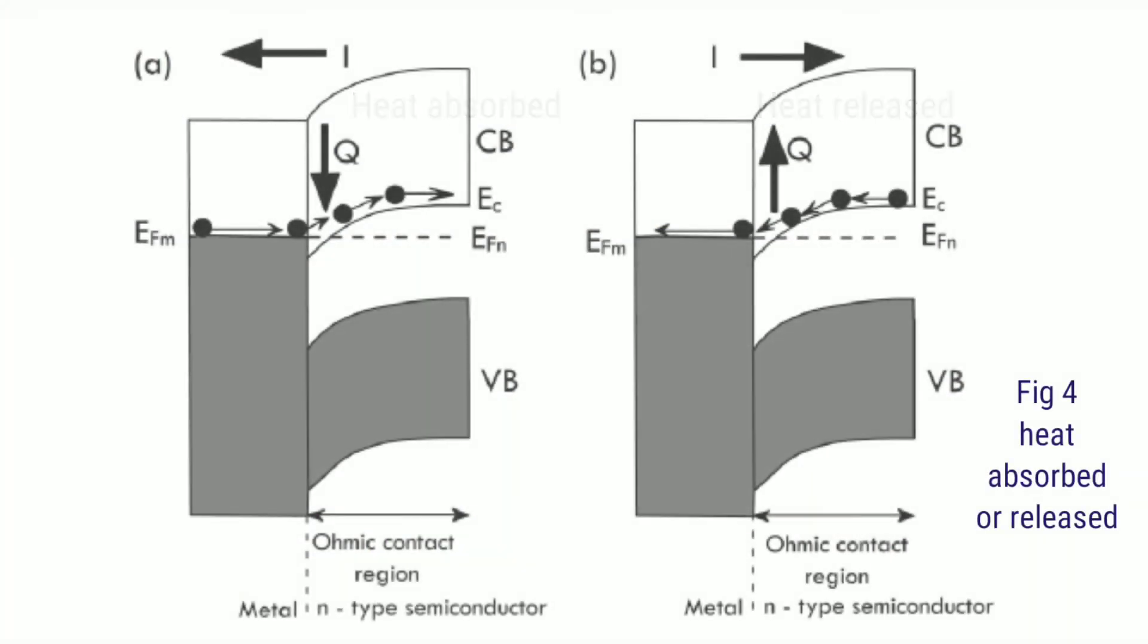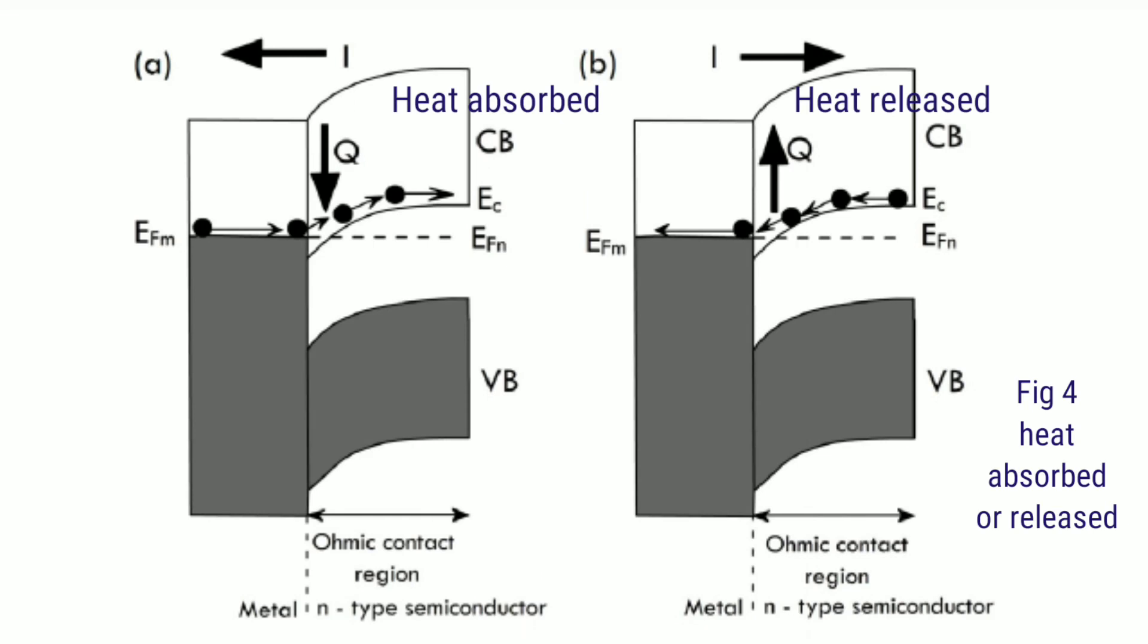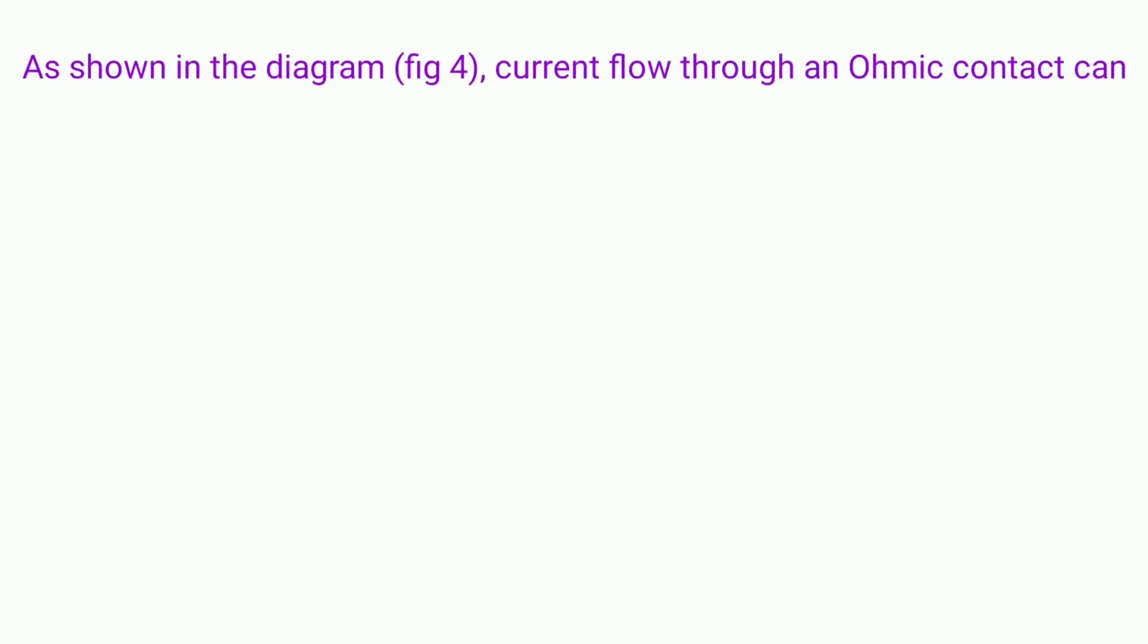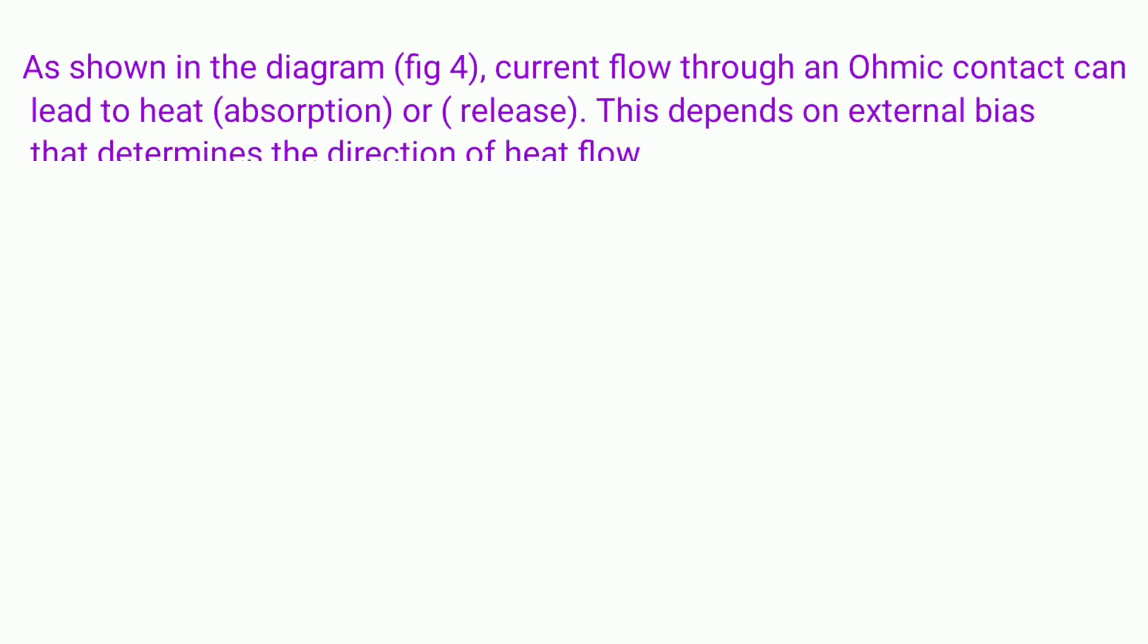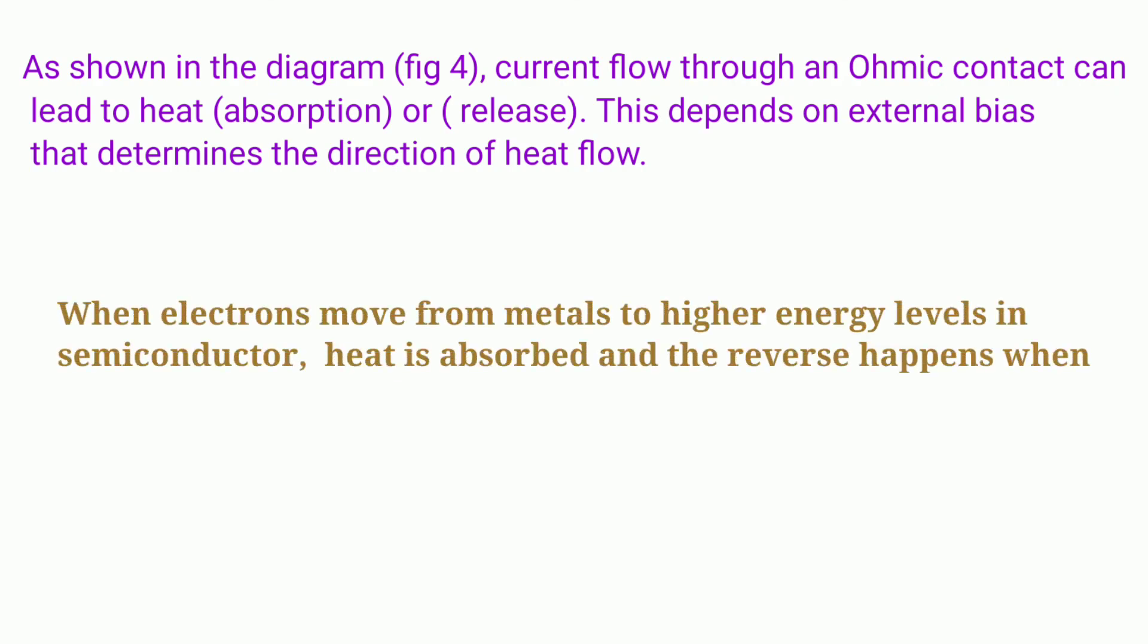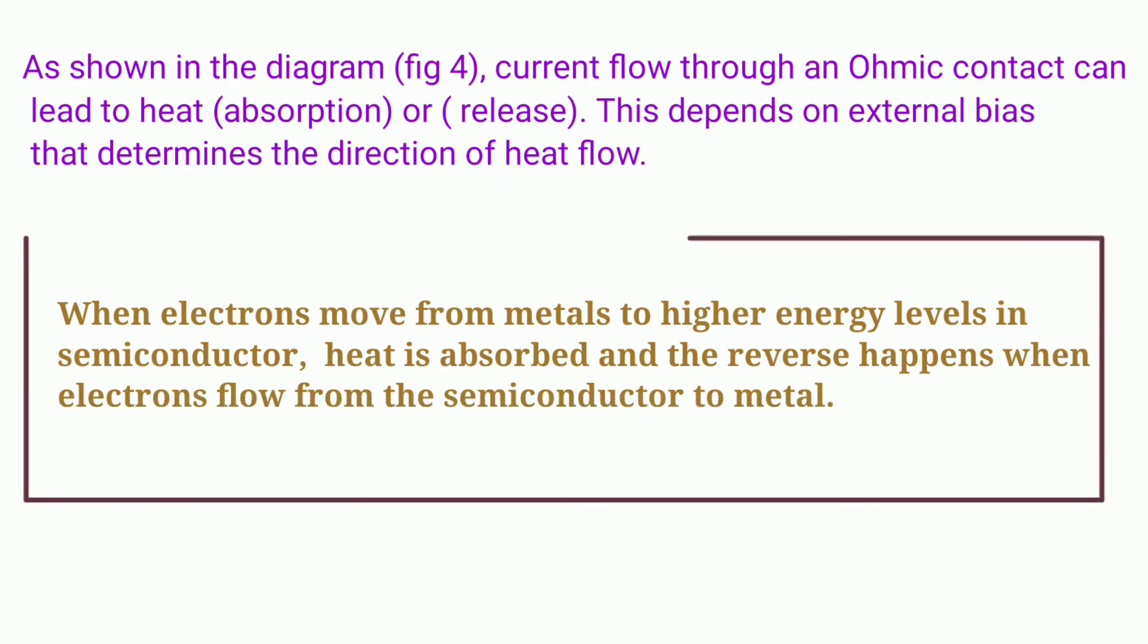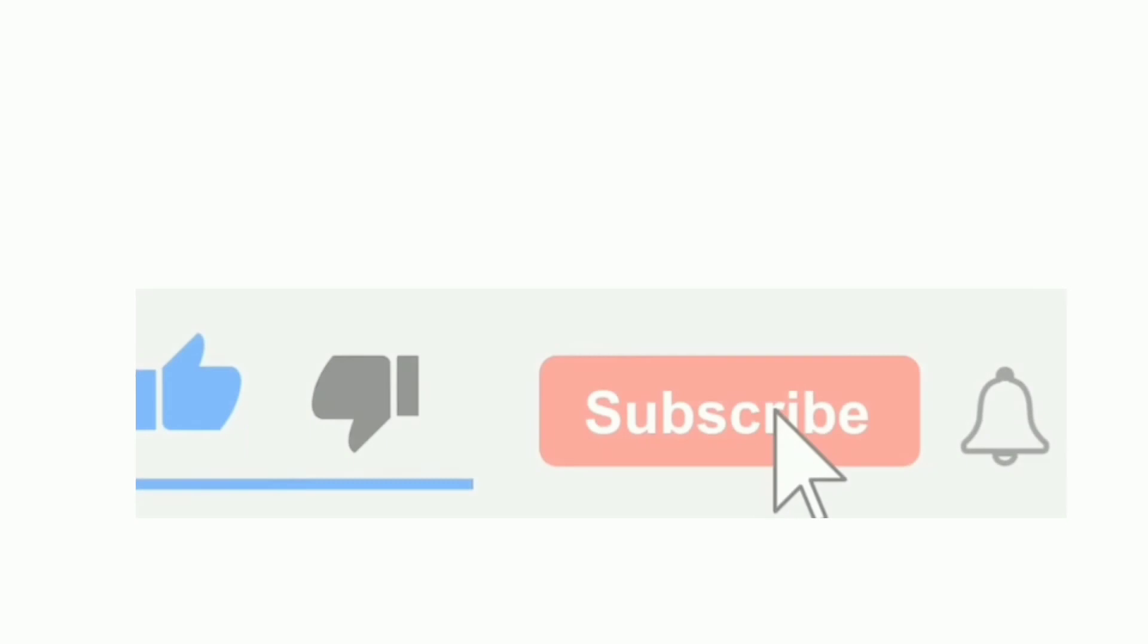And this is how the heat is absorbed or released. The current flow through the ohmic contacts can lead to heat absorption or release. This depends on external bias that determines the direction of heat flow. And the thumb rule is when electrons move from metals to high energy levels in the semiconductor heat is absorbed and the reverse happens when electrons flow from the semiconductor to metal side.